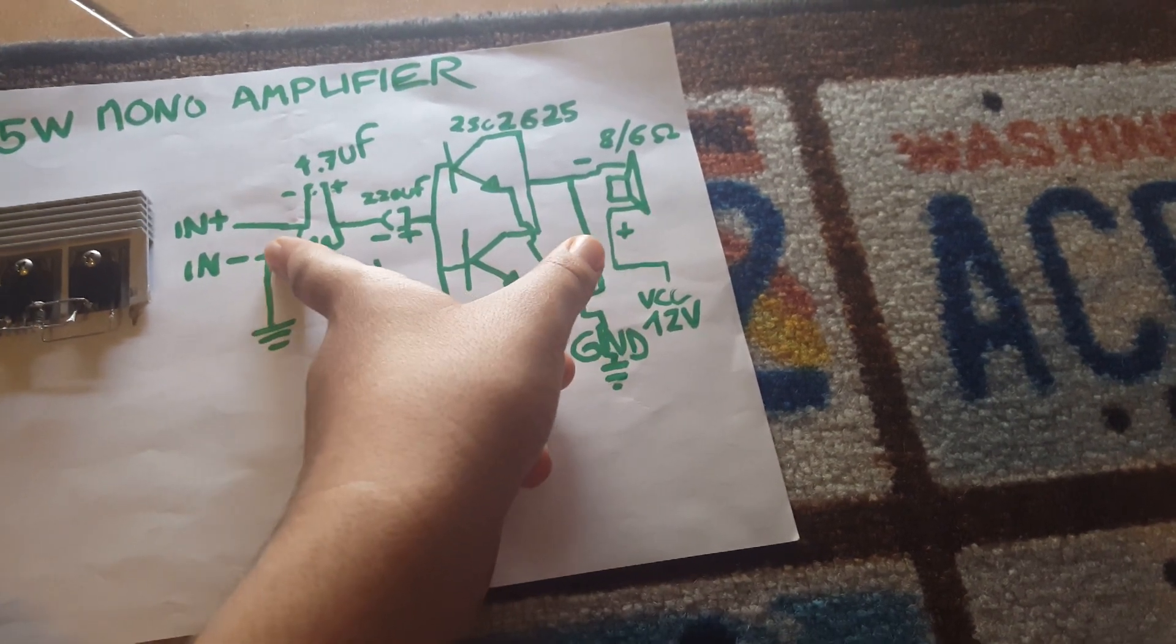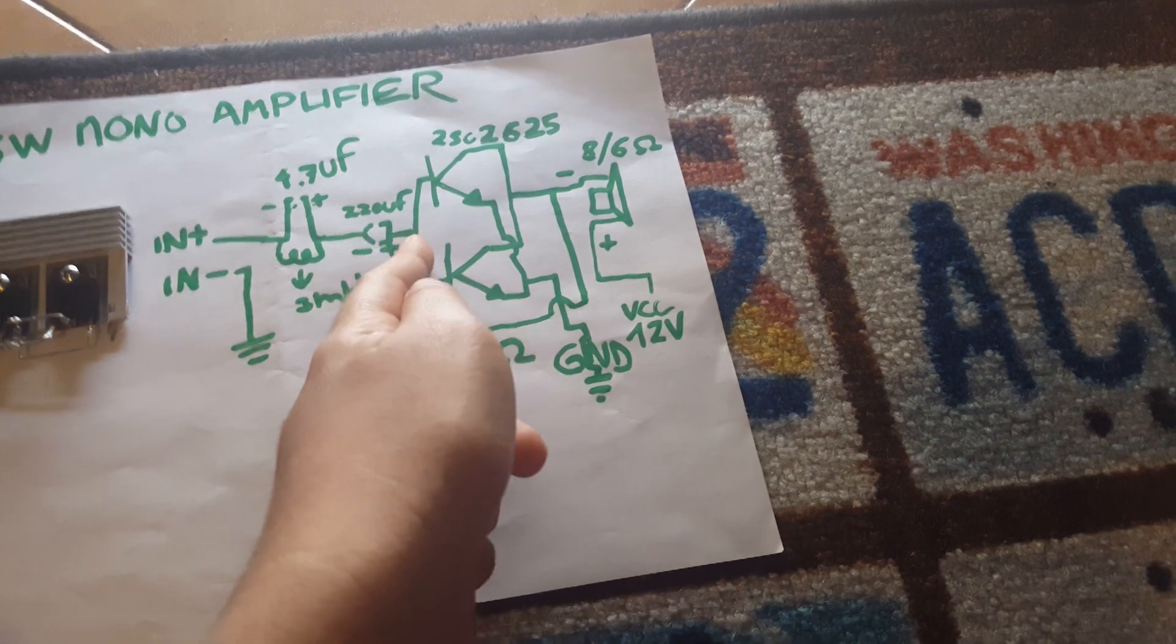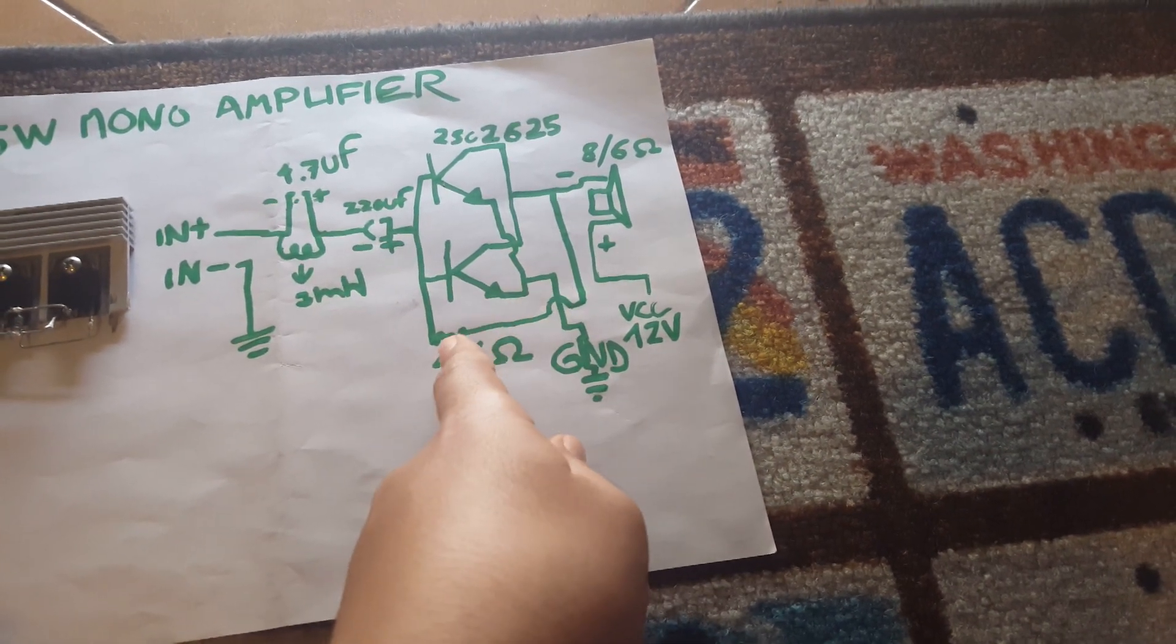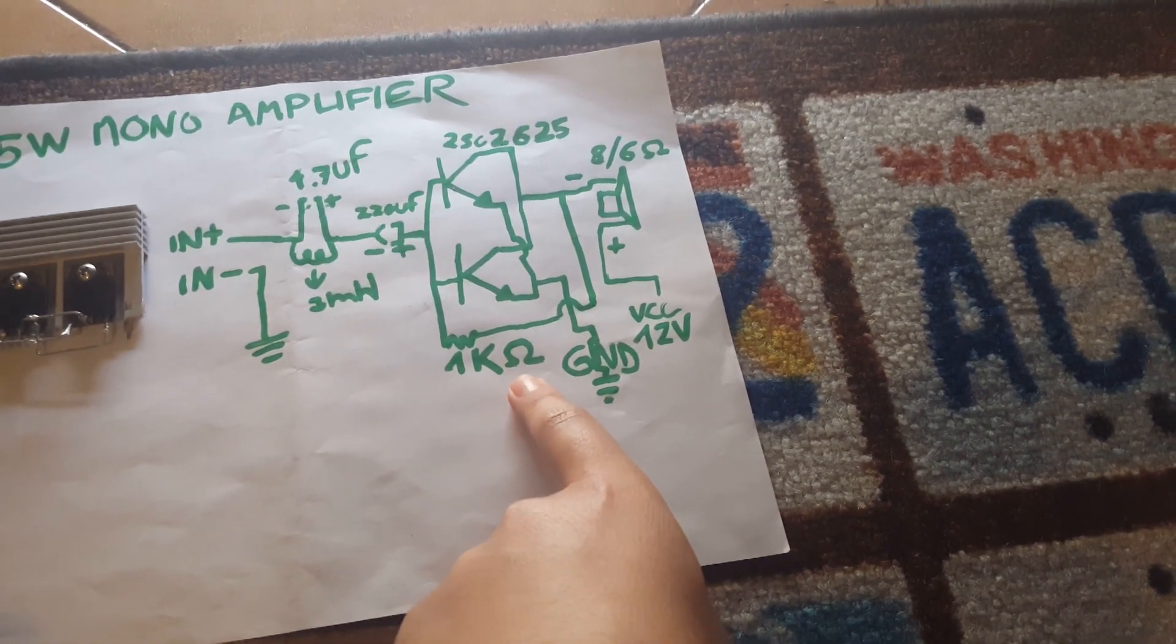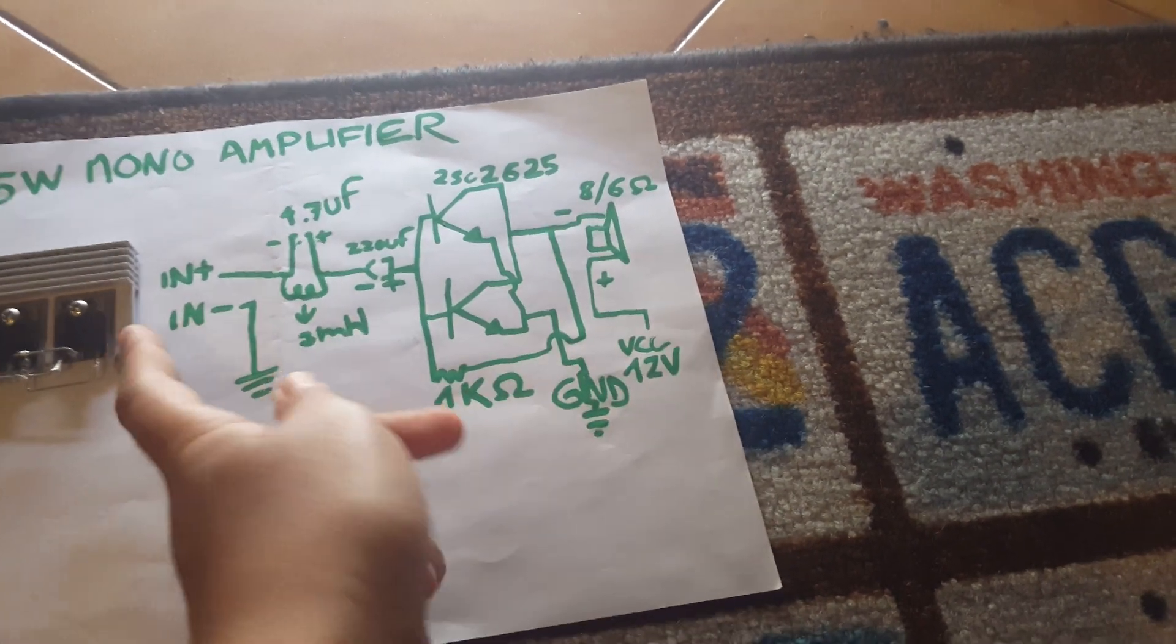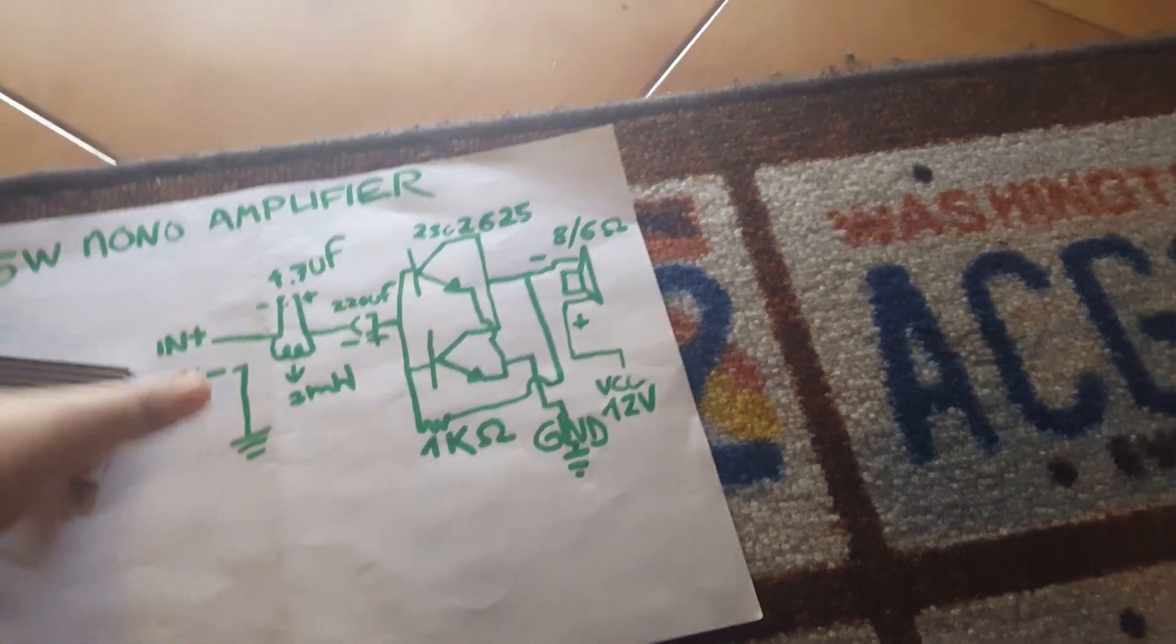The input minus goes to ground. Then, the bass and the collector are connected together by a 1kΩ resistor, which is a feedback resistor. Without it, it can't do anything.